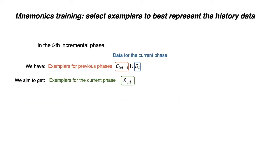In incremental phase i, we have the exemplars for previous phases and the original data for the current phase. We aim to learn new exemplars to best represent them. That is, we want the model trained on the new exemplars as close as possible to the model theta_i*, which is trained on the original data for the current phase and the exemplars for previous phases.